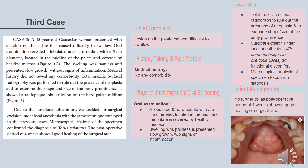The 45-year-old woman presented with a lesion on the palate causing difficulty swallowing. Oral examination revealed a lobulated, hard nodule with a 5 cm diameter located at the midline of the palate, covered by healthy mucosa. The swelling was painless with slow growth and no signs of inflammation. Medical history revealed no comorbidity. Total maxilla occlusal radiography was performed, showing a radio-opaque lobular lesion on the hard palate midline. Surgical excision under local anesthesia was done, and microscopical analysis confirmed the diagnosis of torus palatinus. The post-operative period of four weeks showed good healing.